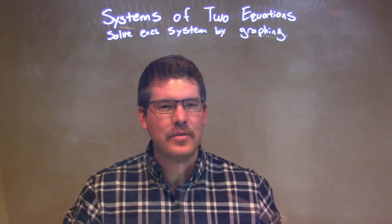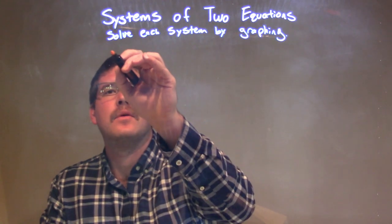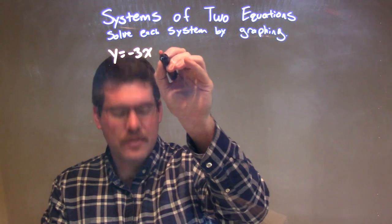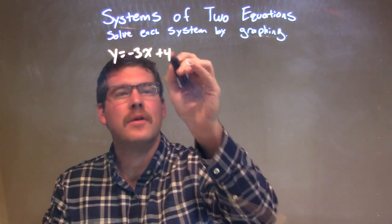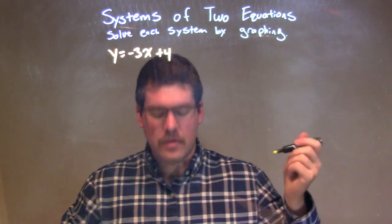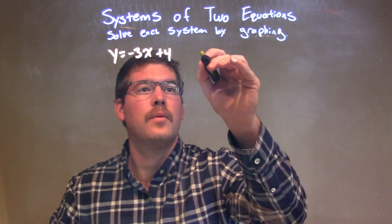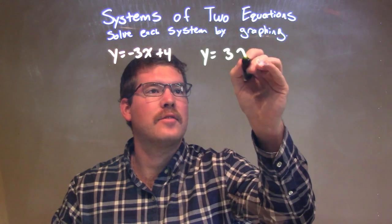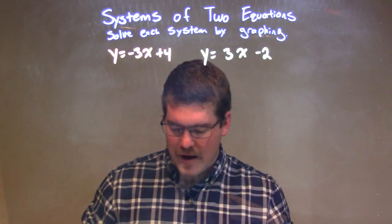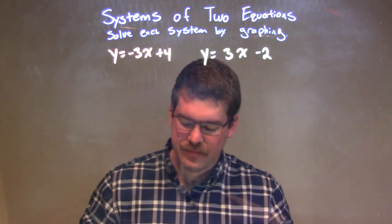So, if I was given these two equations, y equals negative 3x plus 4, let's make the other one in yellow, y equals 3x minus 2. And we need to solve this by graphing, by graphing.